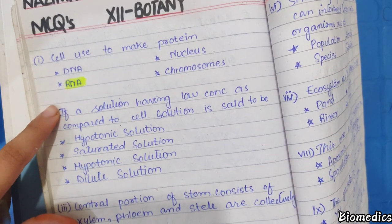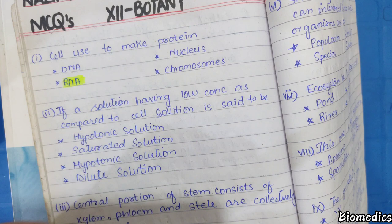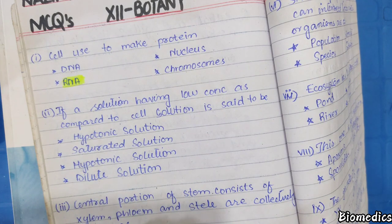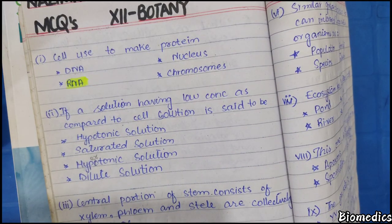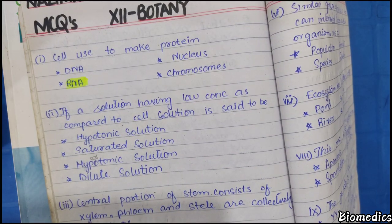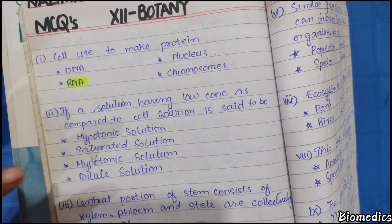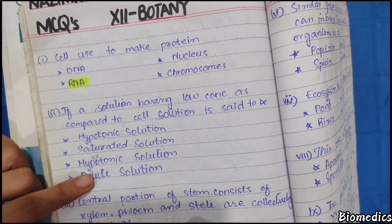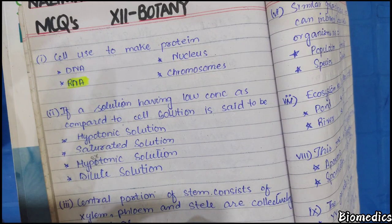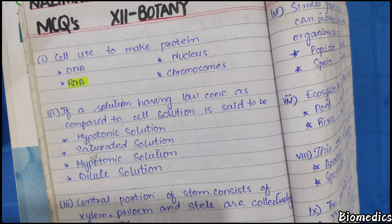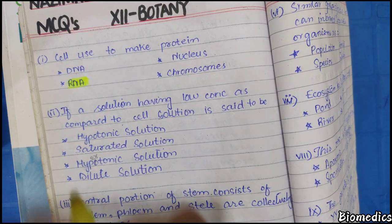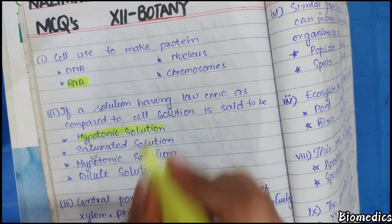Next question: A solution that has low concentration compared to the cell solution is said to be? Wherever the concentration is low compared to the cell, we call it a hypotonic solution. Wherever the concentration is high, we call it hypertonic.